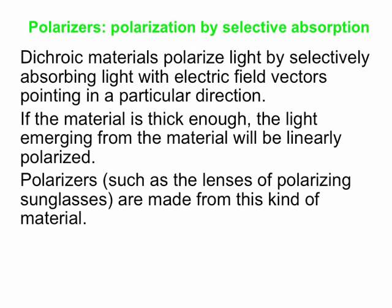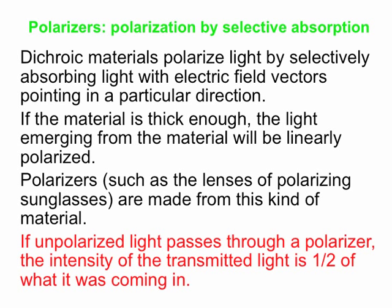The lenses of polarizing sunglasses are in fact made of dichroic material. One important thing to keep in mind: if you take completely unpolarized light and shine it through a polarizer, exactly half of the intensity goes through. So half is absorbed and half passes through — the intensity afterwards is half as much as it was coming in; the light is half as bright.